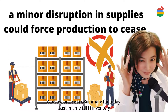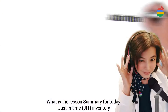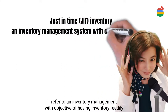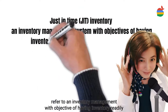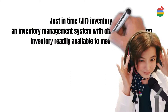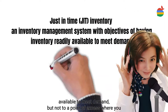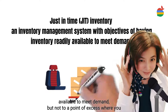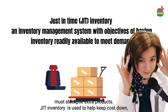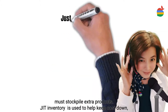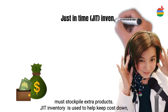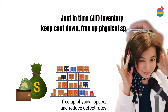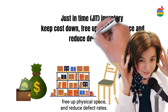What's the section summary for today? Just-in-time JIT inventory refers to an inventory management system with the objective of having inventory readily available to meet demand, but not to the point of excess where you must stockpile extra products. JIT inventory is used to help keep costs down, free up physical space, and reduce defect rates.